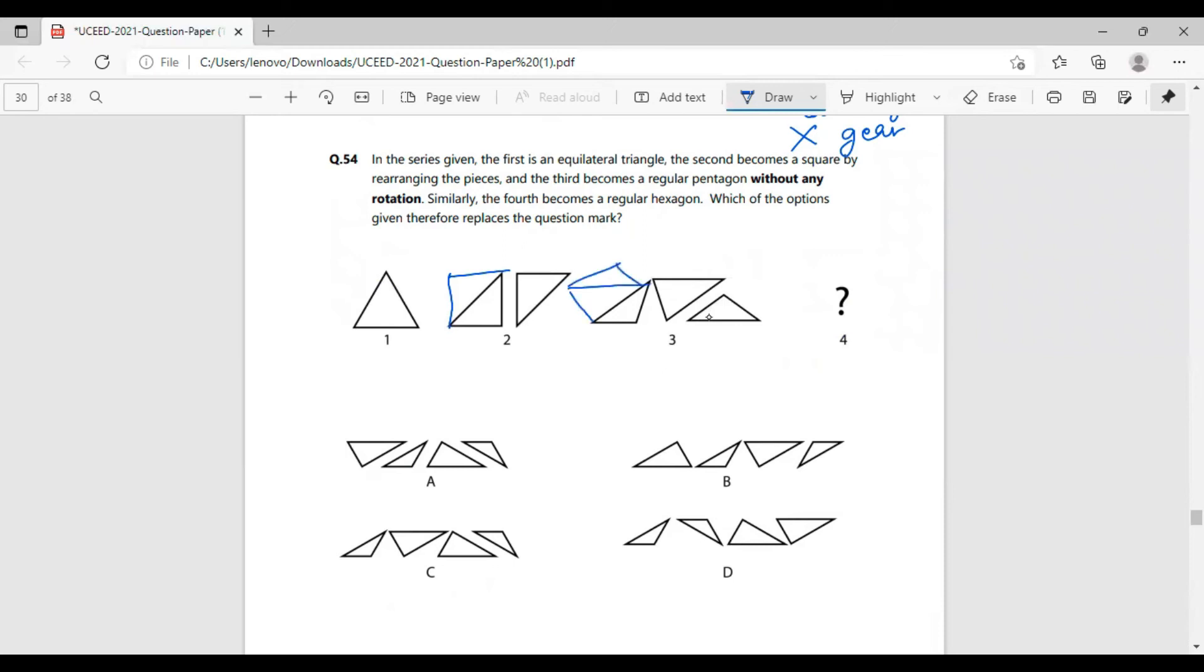We have to figure out which of these four options correctly makes a hexagon according to the given pattern, which has been provided here. According to the consideration, we have the correct answer as part C.